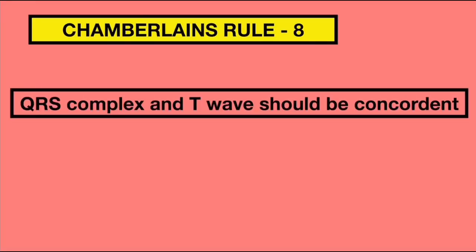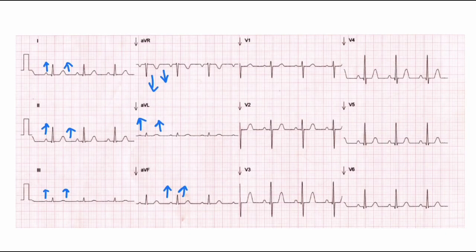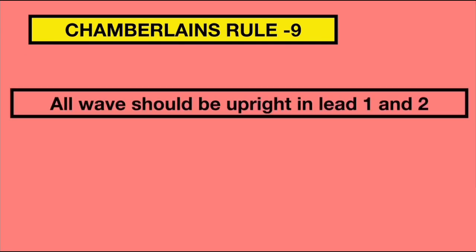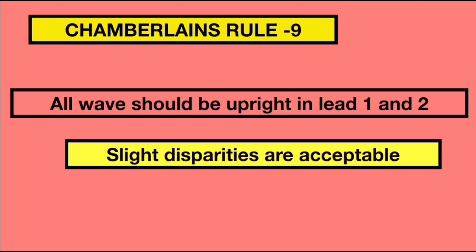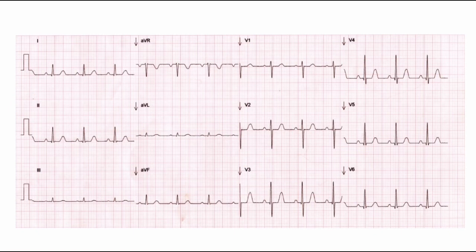Rule 8 states that in limb leads, the QRS complex and T waves should be concordant. Here we can see that the QRS and T are concordant. Rule 9 states that in lead 1 and lead 2, all waves should be upright. In this ECG, we can see that all waves in lead 1 and lead 2 are upright.